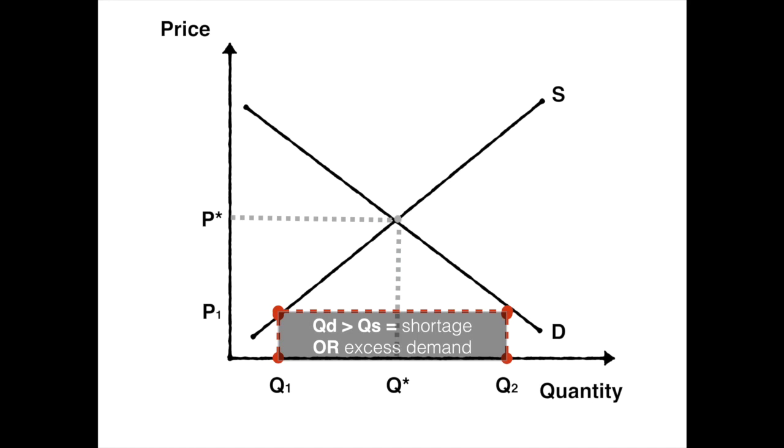whatever that excess demand is. And as mentioned before, in order to clear this market, the price would have to rise. So in order for the market to clear, price has to go up.